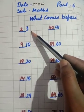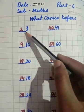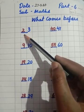Three comes before. Three se pehele kaunsa number aata hai? Two.